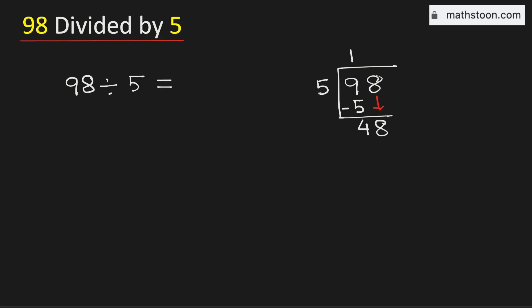And we know that 5 times 9 is 45. Subtract, we get 3. Now see that 3 is less than 5 and we have no number to bring down here.